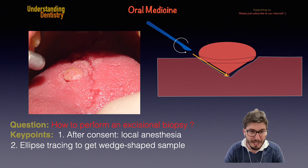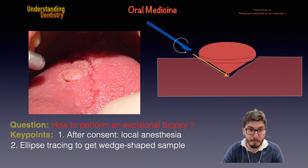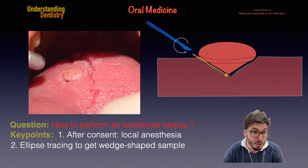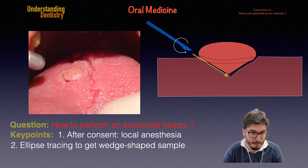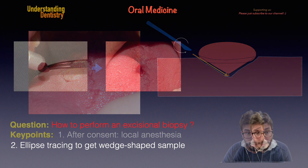Remember that we are talking about the tongue here, so we don't have as much space for local anesthesia as we have for normal infiltrations that you routinely perform — for example, to treat root canals. This is something important to keep in mind before proceeding with removal of the lesion.